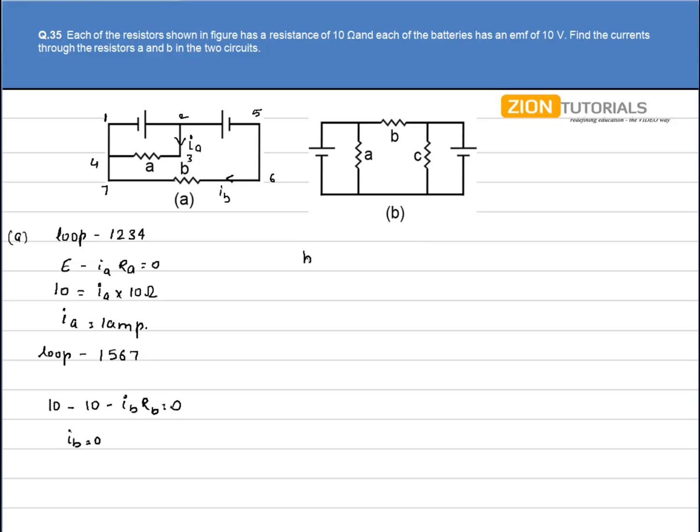In the second part, again name each of the junctions: 1, 2, 3, 4, 5, 6, 7, and 8. Now let us assume the current through each of the resistors is IA, IB, and IC.